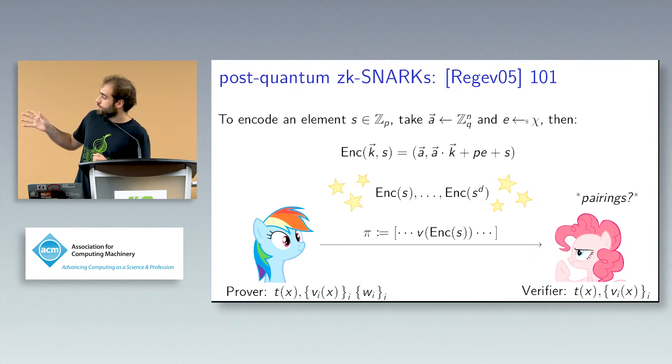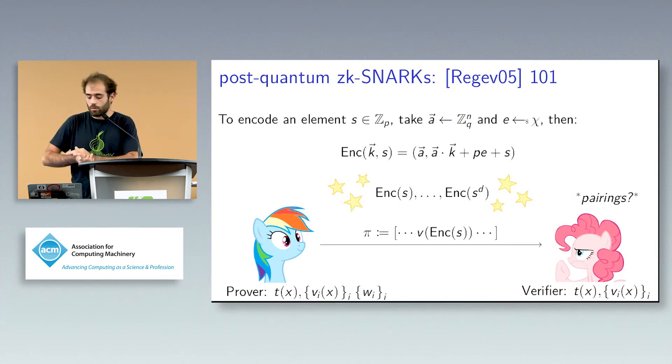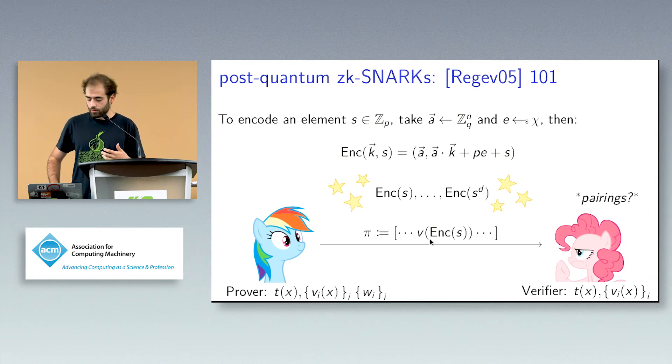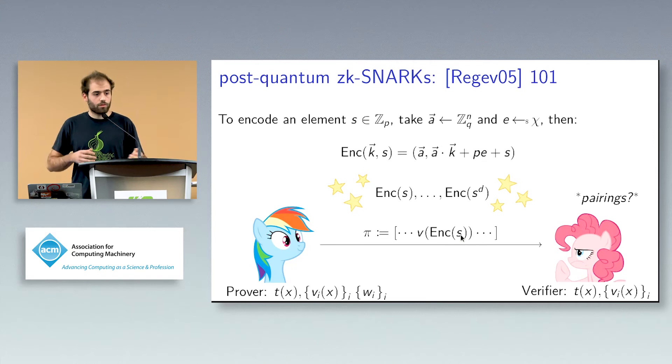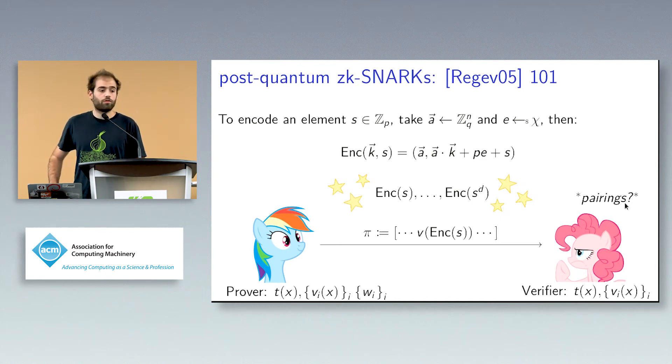What this more precisely means is that, for example, you can see this instantiate this protocol using symmetric Regev encryption, which basically means that if you want to encrypt a message s with your key, you basically do scalar product of the key with a random vector, you add the error, you add the message, and this you do for all the powers of s. Now you can construct the evaluation, you can evaluate this polynomial over s because up to some number crunching on the parameters, you need, you can perform linear operations on these lattice encodings.